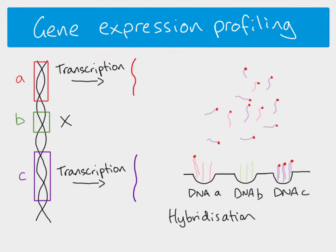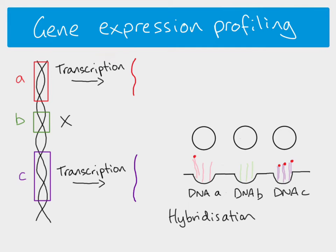Sometimes there is only partial hybridization — the DNA probe binds with a slight kink rather than completely hybridizing. You then wash the microarray, and any DNA that has not completely hybridized to the probe gets washed away.